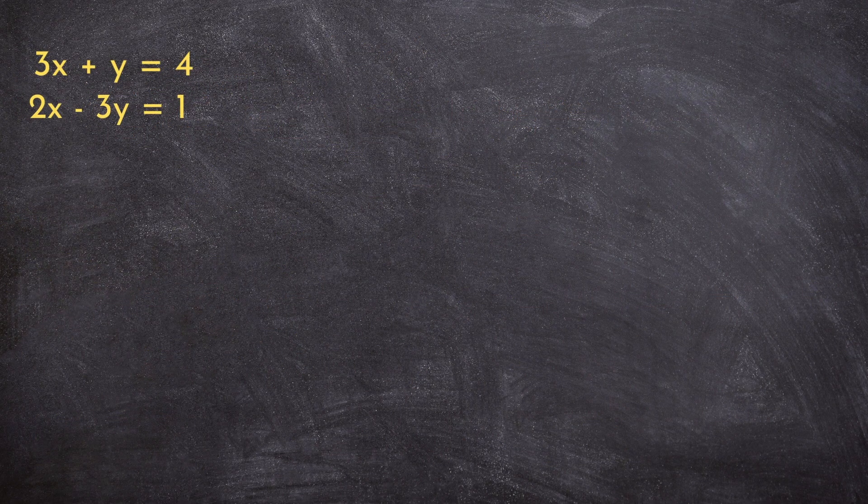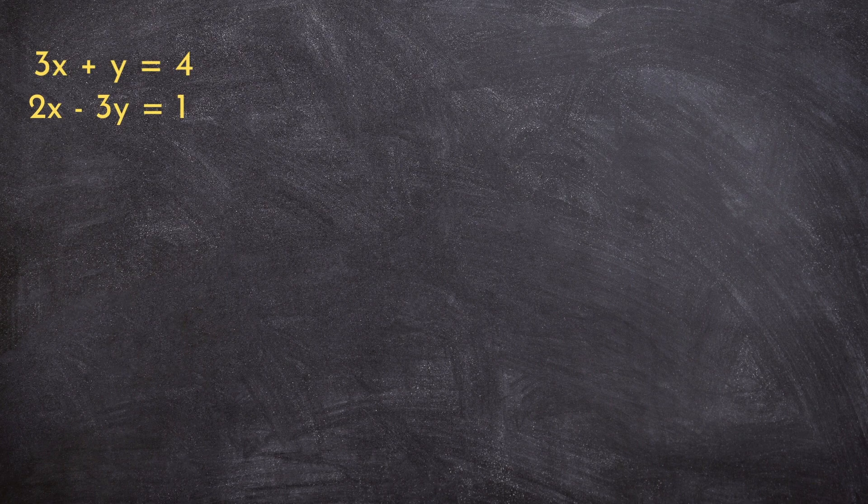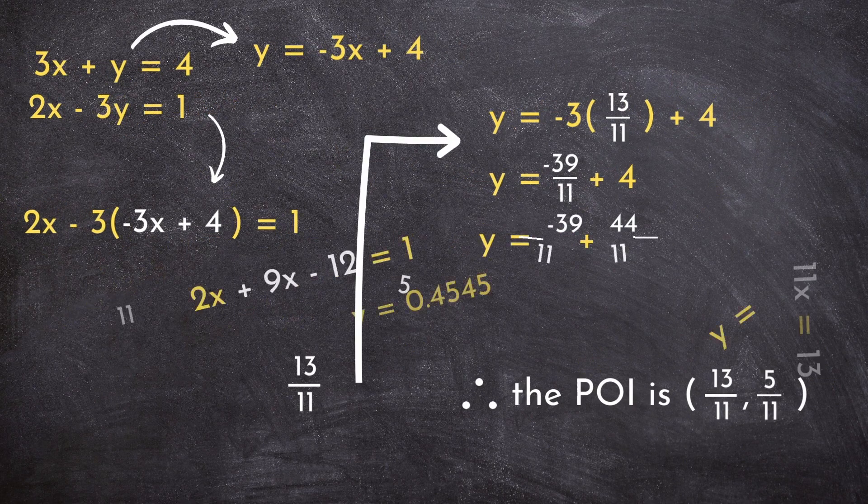At first glance, there's nothing really strange about this linear system. Y is almost isolated, so substitution seems easy enough. But there is one step later on in this example that I want to highlight that really throws students for a loop.